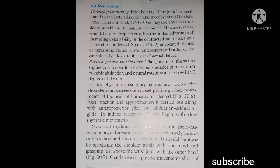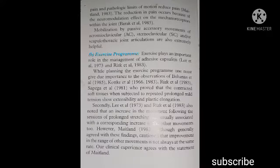Slow rhythmic movements at the glenohumeral joint in forward stooping effectively induce relaxation and promote mobility. The physiotherapist should stabilize the shoulder girdle with one hand and grasp just above the wrist joint with the other, performing gentle relaxed passive movements short of pain and pathological limits of motion. Reduction in pain occurs because of the neuromodulation effect on the mechanoreceptors within the joint. Mobilization by passive accessory movements of acromioclavicular (AC), sternoclavicular (SC), and/or scapulothoracic joint articulations are also extremely helpful.